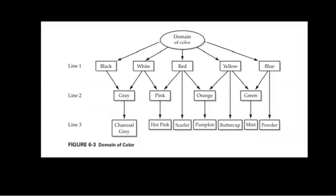In the domain of color, the most common, most unmarked colors are black, white, and the primary colors — red, blue, and yellow. There are also secondary colors like green, orange, and purple, and many specific shades such as powder blue, mint green, and hot pink. The more specific a term, the more marked it is. The words in line one are the most unmarked, most general, and most common; line two more marked, more specific, and more uncommon; and line three the most marked, most specific, and most uncommon.